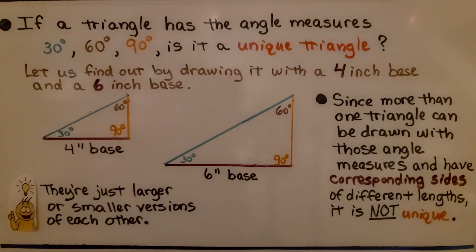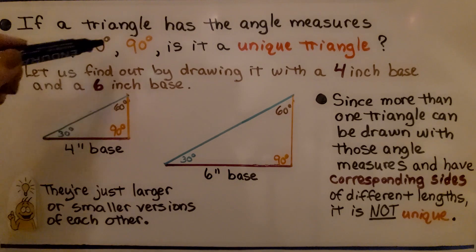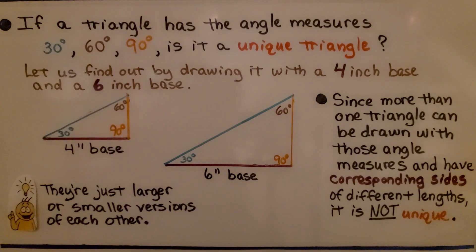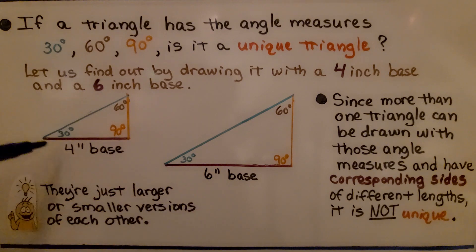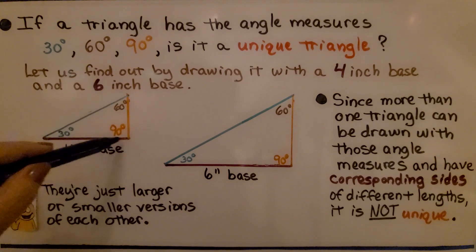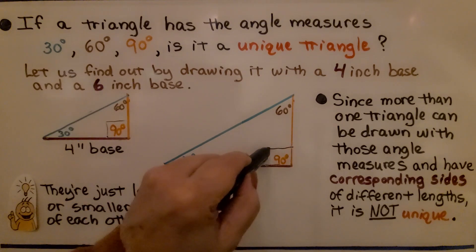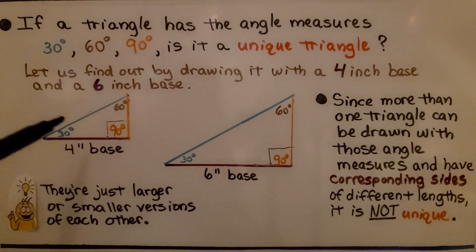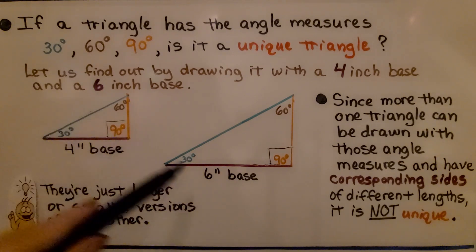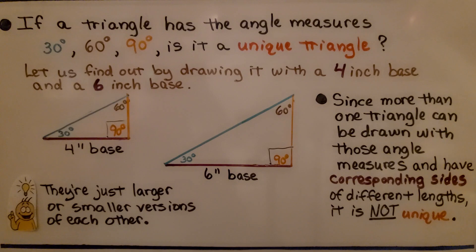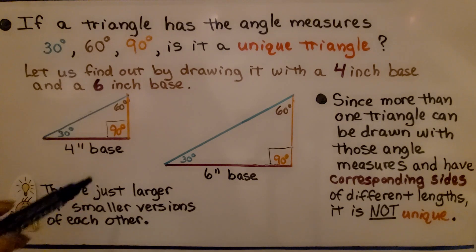If a triangle has angle measures of 30 degrees, 60 degrees, and 90 degrees, is it a unique triangle? Let's find out by drawing it with a 4 inch base and a 6 inch base. We draw a 4 inch base, make a 30 degree angle, a 60 degree angle, and a 90 degree angle — that's a square corner, a right angle. If you take a look at both, they're just larger or smaller versions of each other. Since more than one triangle can be drawn with those angle measures with corresponding sides of different lengths, it's not unique.